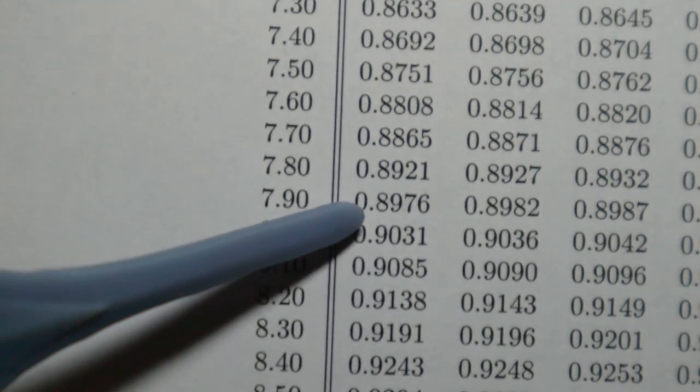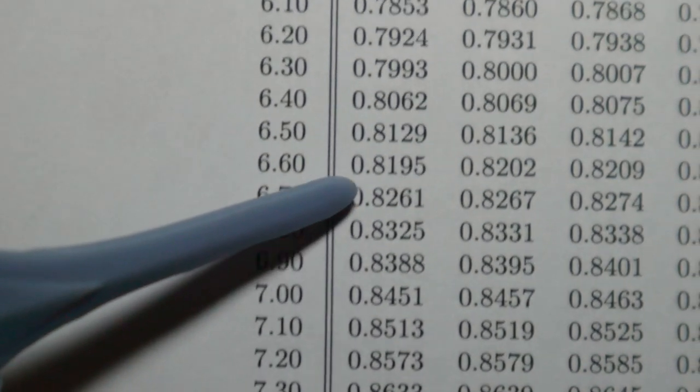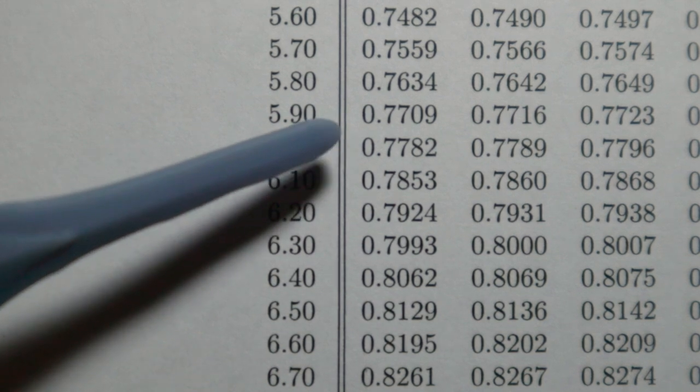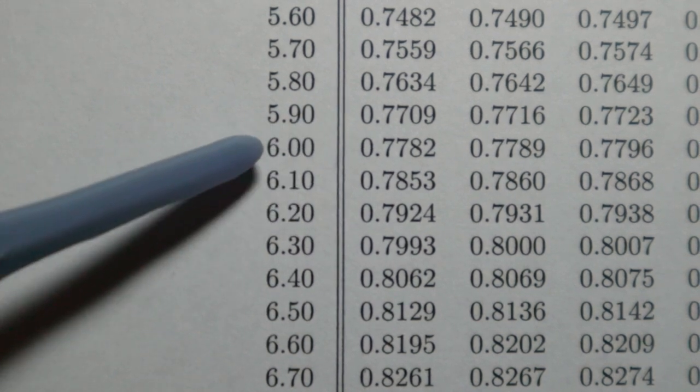Using the table, we look for the number that approximately has this result as a logarithm. And that is the result: 6. In principle, with a table of logarithms and knowledge of these properties, these and other operations that we are not going to talk about on this occasion can be carried out.